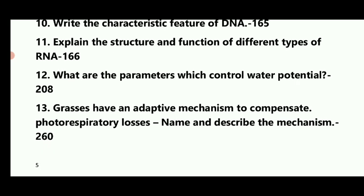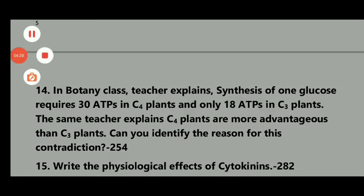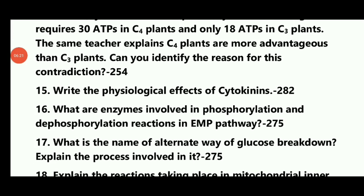Grasses have an adaptive mechanism to minimize photorespiratory losses — name and describe that mechanism. In botany class, teachers explain that synthesis of one glucose requires 30 ATP in C4 plants and also 30 ATP in C3 plants. The same teachers explain that C4 plants are more advantageous than C3 plants. Can you identify the reason for this contradiction? C3 and C4 plants are different — write the physiological aspects of cytokinin, page 282.